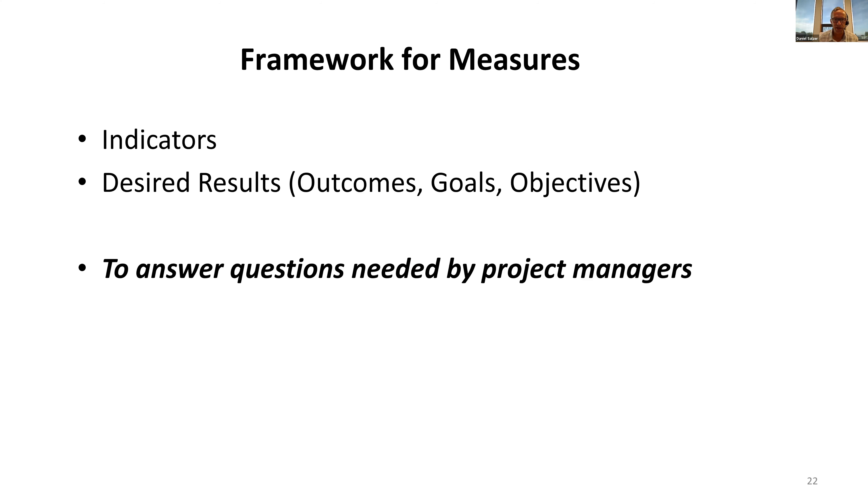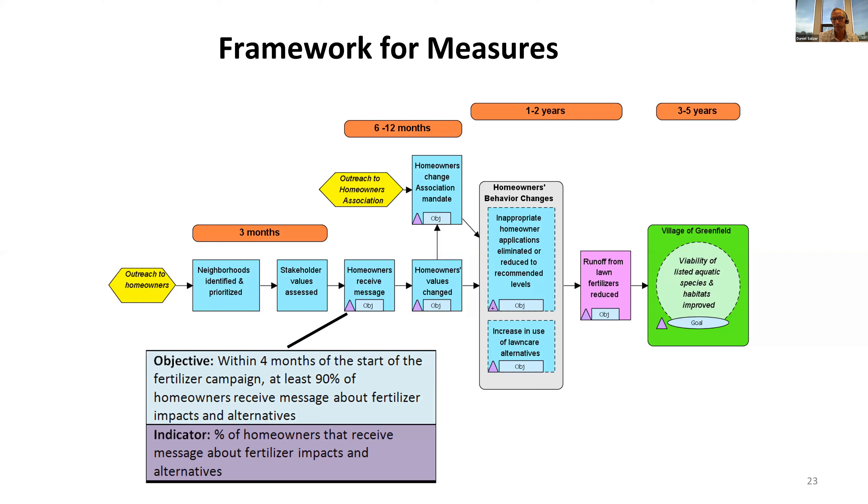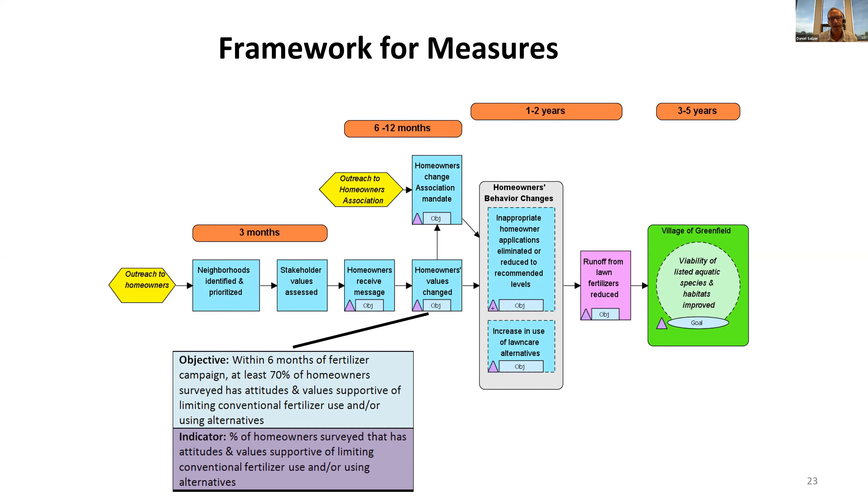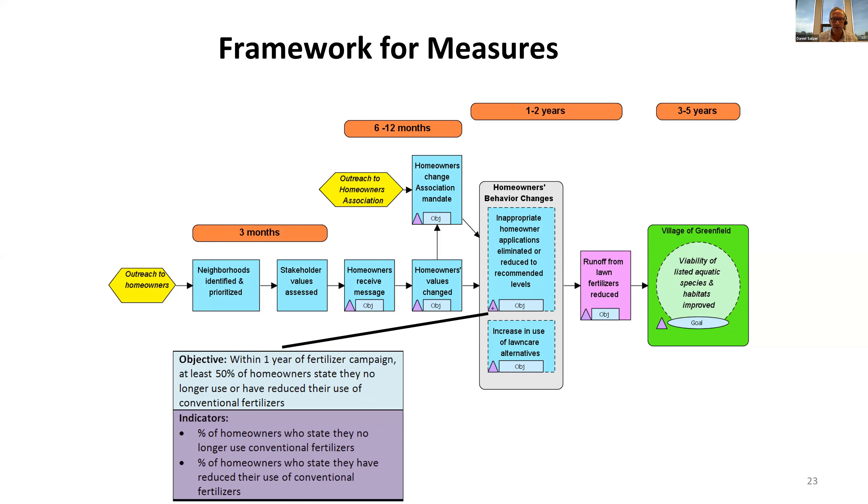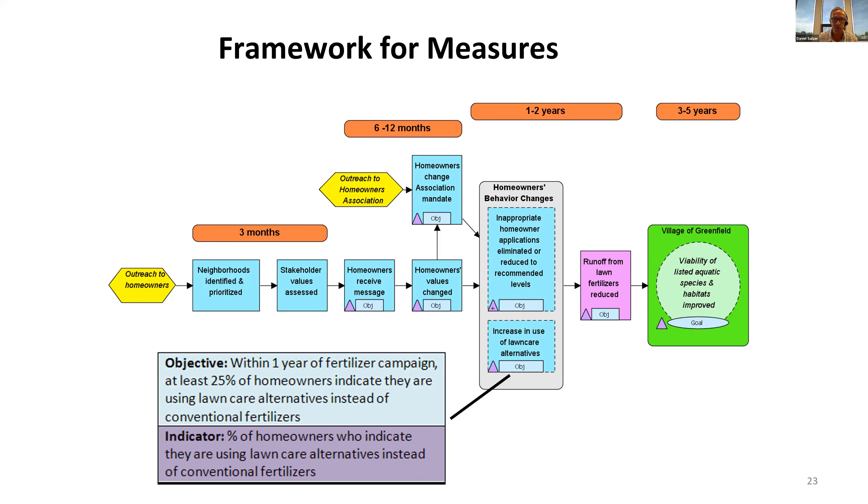One of the real benefits of laying out your theory of change in a results chain is you create your frame to add measurement information—both clarity around the desired results you're trying to achieve, outcomes or goals or objectives, as well as indicators. You can see some intermediate results have a stated time-bound measurable objective and corresponding indicator.